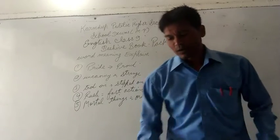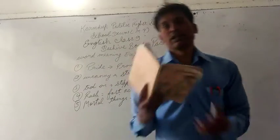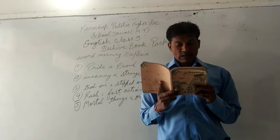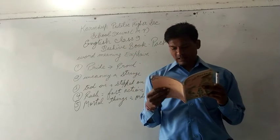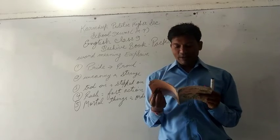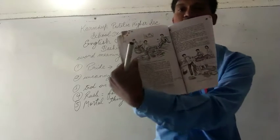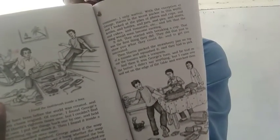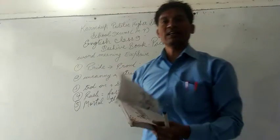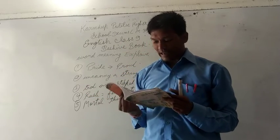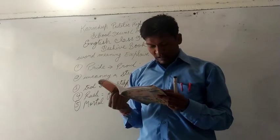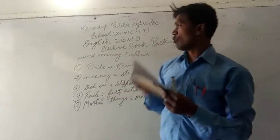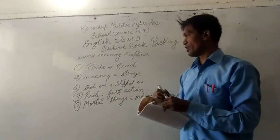We are going to see the summary part, so take out your base book. This is a story — Packing — which consists of three friends. You are going to see this highlighted picture. Three friends are there; they are doing packing. And the author is Jerome K. Jerome.